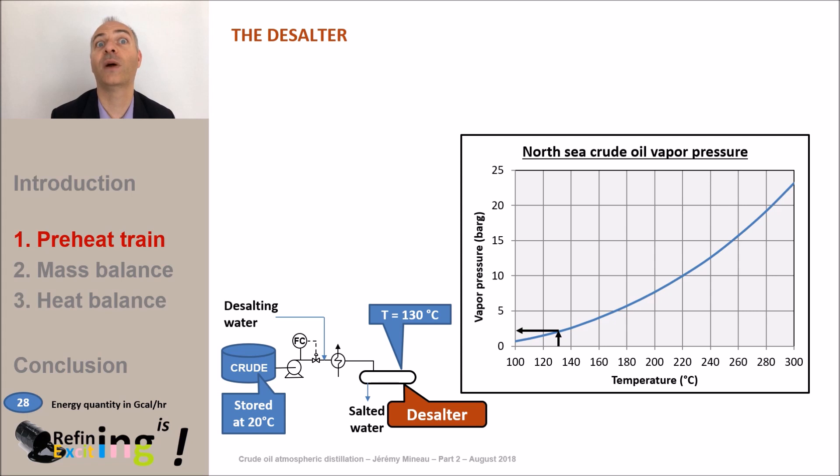We take a margin for the case where the crude would have a higher quantity in light molecules and or in case we should operate the desalter higher in temperature and we will operate the desalter typically 5 bar above this pressure. For our case 2.5 bar plus 5 bar, say 8 bar G.